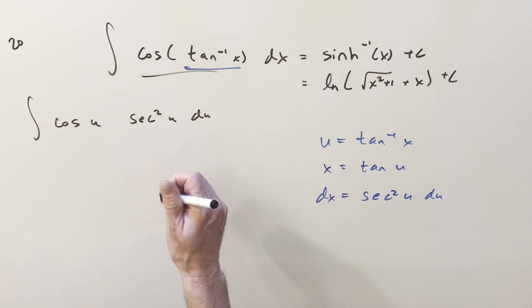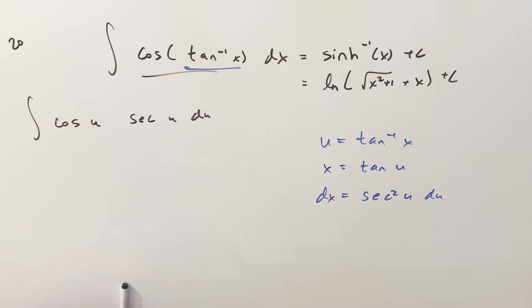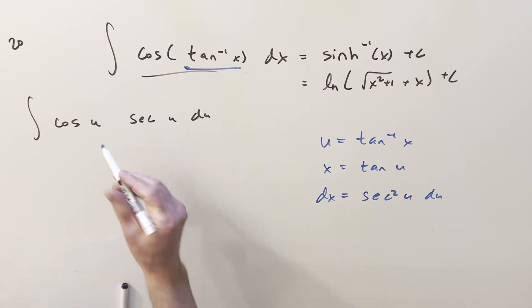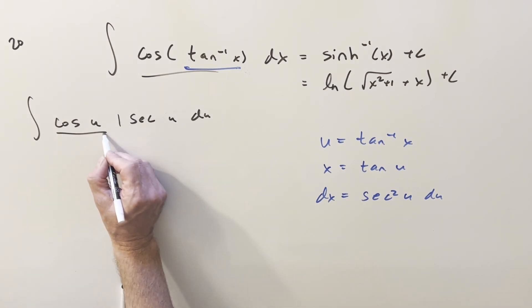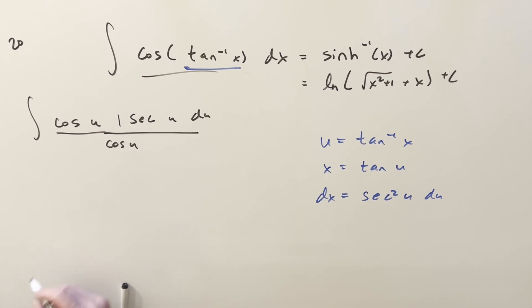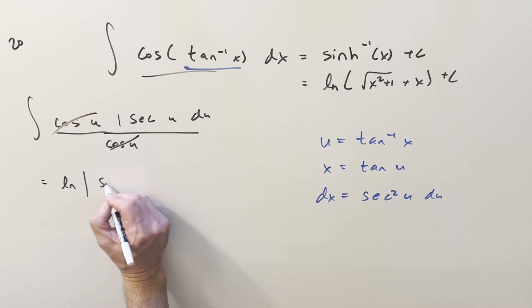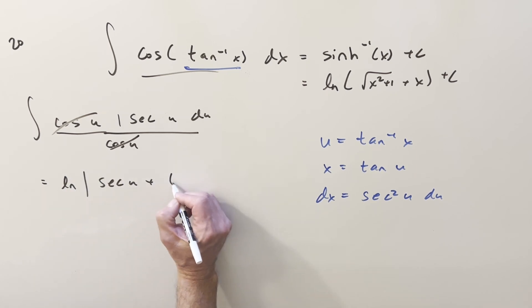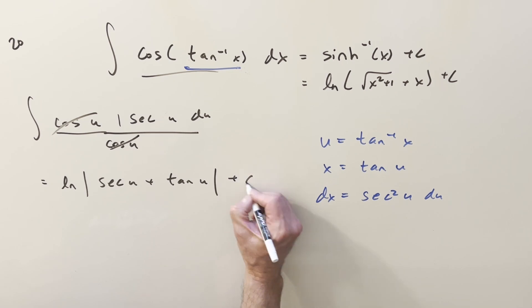Let's rewrite this. Secant is the same thing as 1 over cosine, so I'll write one of the secants as 1/cos(u). That way the cosine(u) and 1/cos(u) cancel, leaving us integrating sec(u) du. Integrating that gives us ln|sec(u) + tan(u)|. You can see these two methods are really similar — just a slightly different approach.